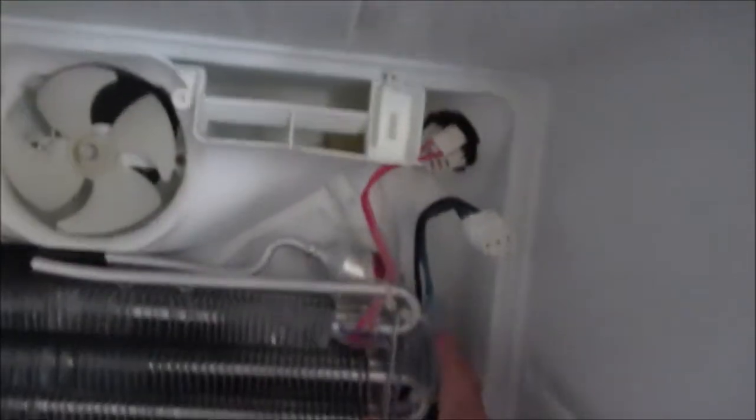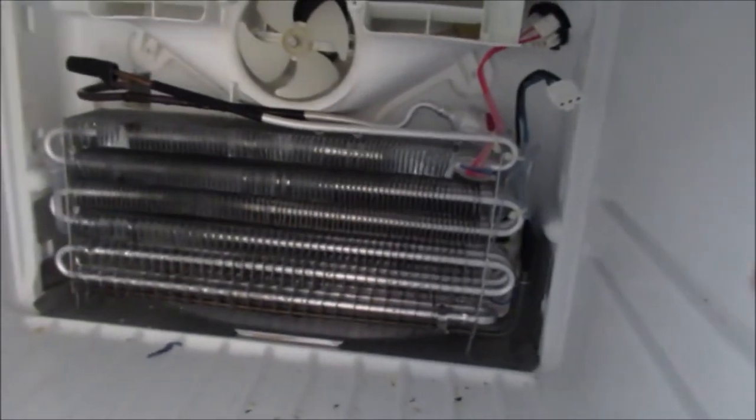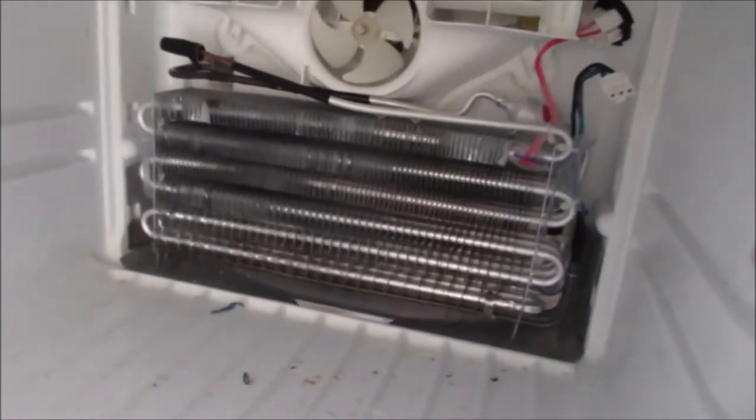And just to show what the defrost heater is, it's in the freezer compartment and normally there is a cover over this. There's two screws at the top here, you just undo and then pull this cover off. And the defrost heater was plugged in up here and it runs down and underneath here. So that was what I expected it to be but I couldn't prove it. I was trying to work out a way to test it.